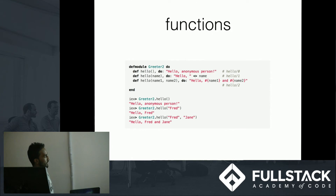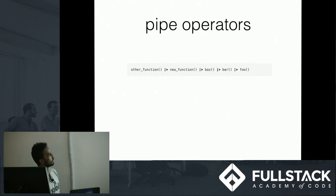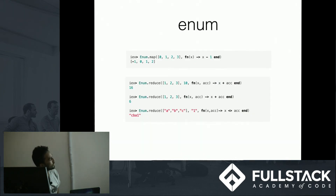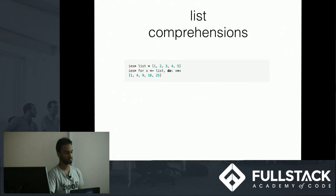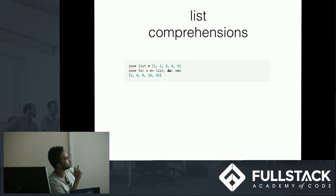Functions are defined with 'def'. You have pipe operators, which are pretty cool — you can feed the result of one function into another, piping data through your functions. You have Enum, which is a built-in Elixir library giving you functions like reduce and map. A list comprehension is just syntactic sugar over Enum — this is kind of how you would loop through data in Elixir, except you don't actually loop, and you can compose comprehensions.